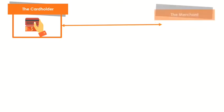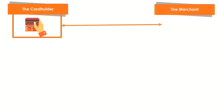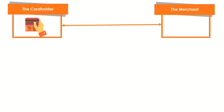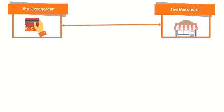The Merchant. The merchant is the seller. This is a company selling products or services at their store. In order to accept card payments using a POS device, the merchant needs to select and sign an agreement with an acquirer bank.